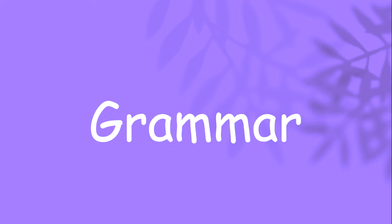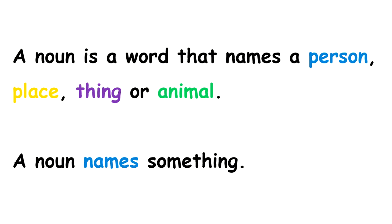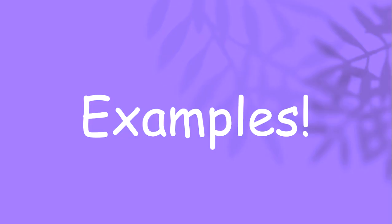Now let's move on to grammar. For grammar, we'll be looking at nouns. Do you know what a noun is? Let's explore the world of nouns now. A noun is a word that names a person, a place, a thing, or an animal. So a noun names something — it names a person, a place, a thing, or an animal.